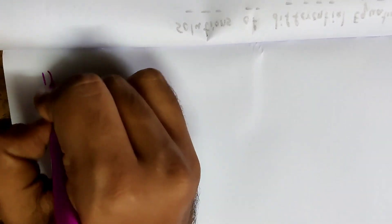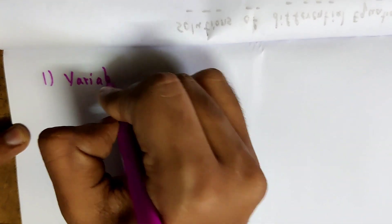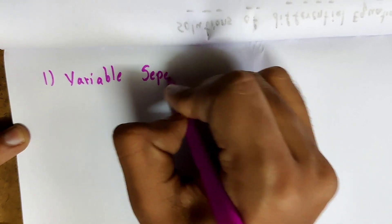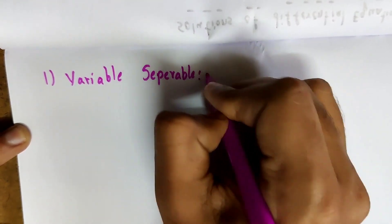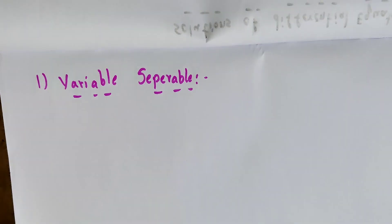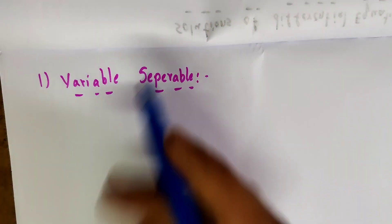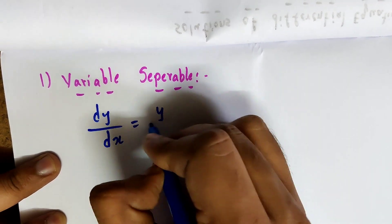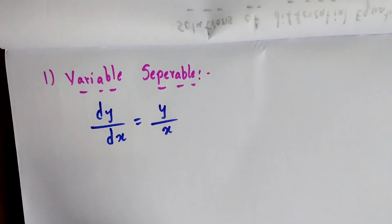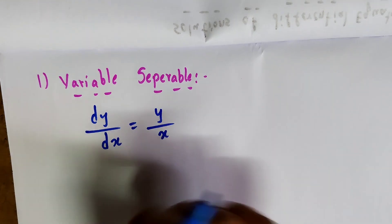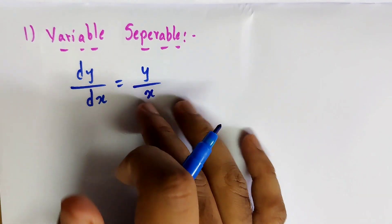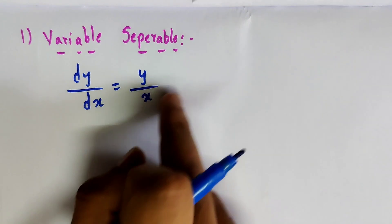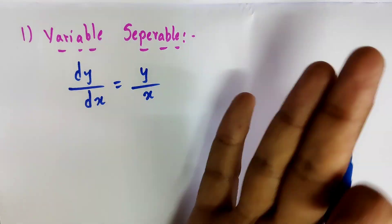Let us see what variable separable means and how to solve it. This is the first method. Given the differential equation dy/dx equals y/x, we need to find the solution using the variable separable method. Now it is your common sense — out of these four methods, you have to decide which method to apply to a particular differential equation.